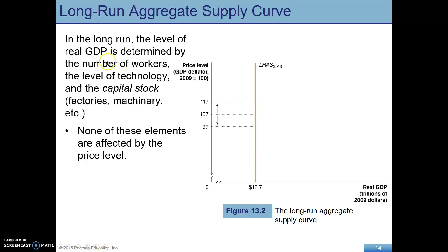Thinking about the economy as a whole, those things — capital, labor, natural resources — are not affected by the price level. So our long-run aggregate supply curve is not affected by the price level; it's just a vertical line.